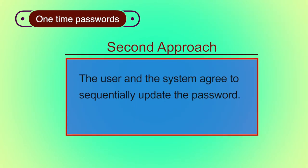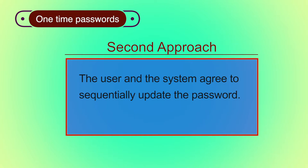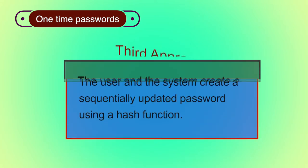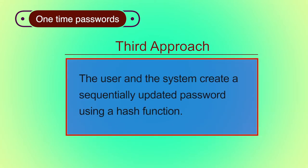In the second approach, the user and the system agree to sequentially update passwords, for example on the basis of time. The OTP is generated with the help of some counter, starting from 001, then 002, then 003, and so on. In the third approach, the user and the system create a sequentially updated password using a hash function. OTPs are generated using a hash function to enhance security — for example, OTPs generated according to the system clock.